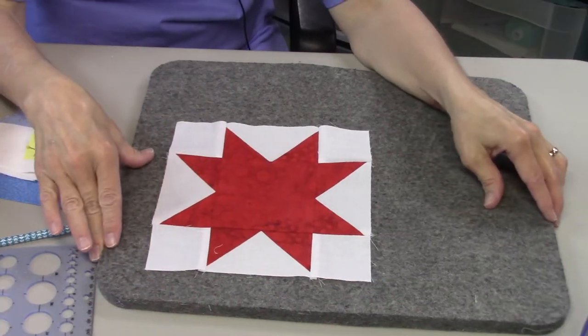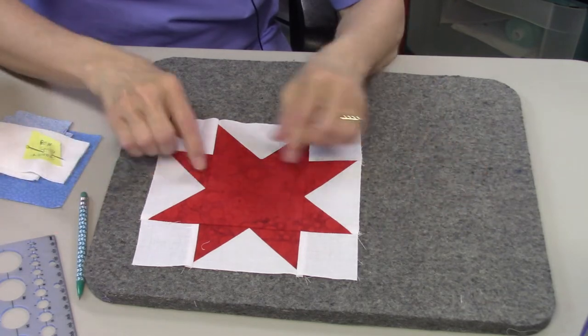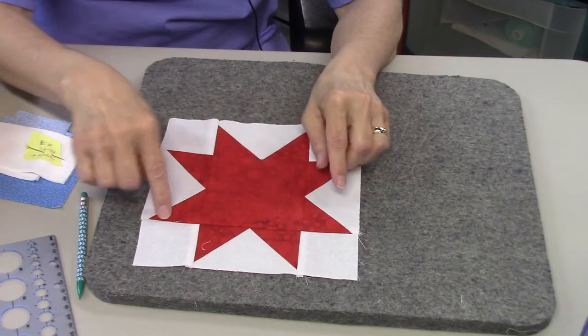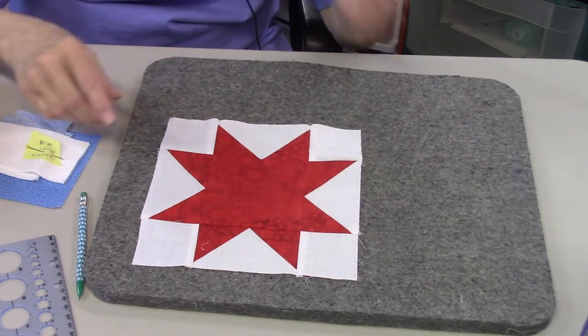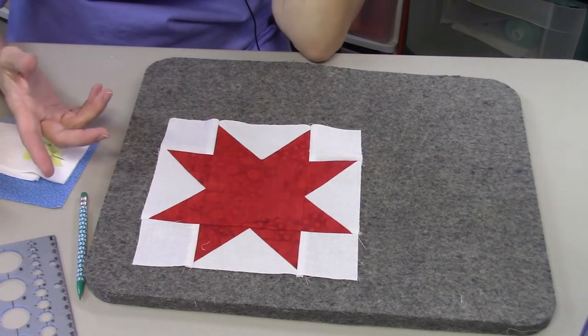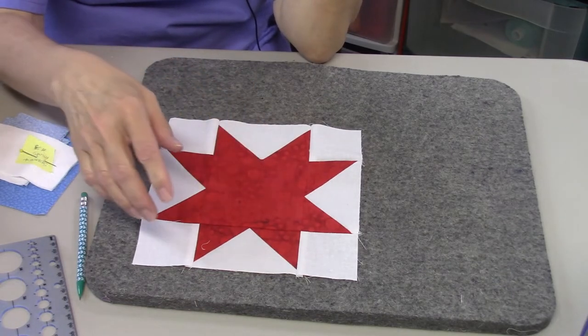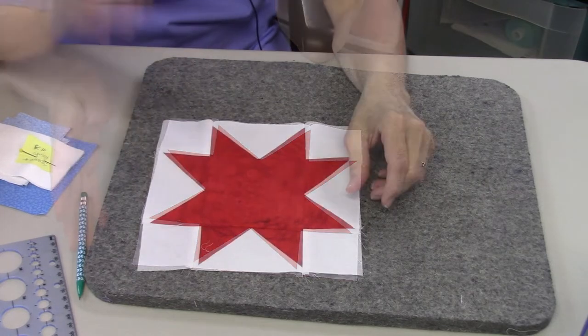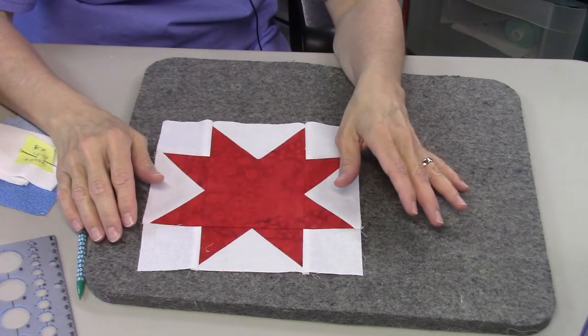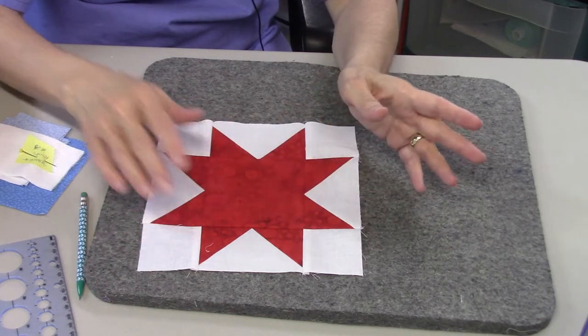Okay, we have done several eight-pointed stars lately and they all go together pretty much the same. You have a center square, you have flying geese units, and then you have your corner squares. There's just different ways to do it. You can divide this up into the four-patch and put different colors in there. You can put different colors in your background. This one is simple with just the same color for your star points as is the center. So you're just using two colors.